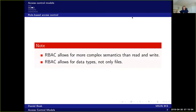Role-based access control allows for more complex semantics than just read and write. For instance, Alice may read a file, but it also allows for specifying data types and not only files. You can change some parts of a file, or you're allowed to read only parts of a file — that's part of the model. So it has a bit more complex semantics.